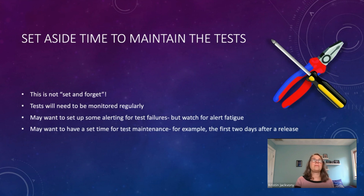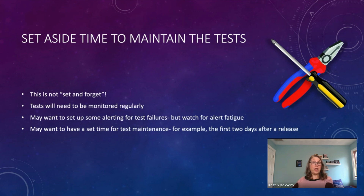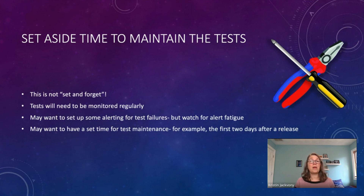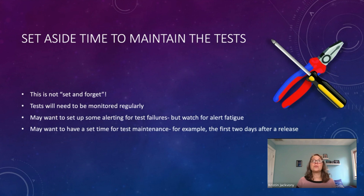For your overnight test runs — like the full test suite in the QA environment — you might want alerting that goes only to you so you can review the failures. But for production deployments where tests have failed, you might want to alert a broader group. You should also set a scheduled time for test maintenance. For example, in the first two days after a release it's usually quiet because developers have just started new things — that's a great time to review your tests and see if there's anything to alter, fix, or change.